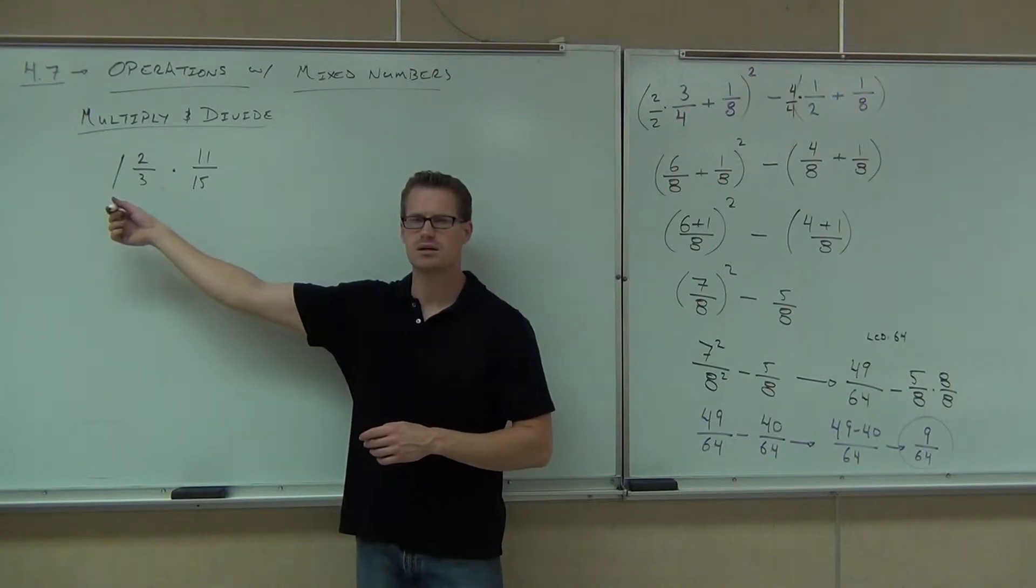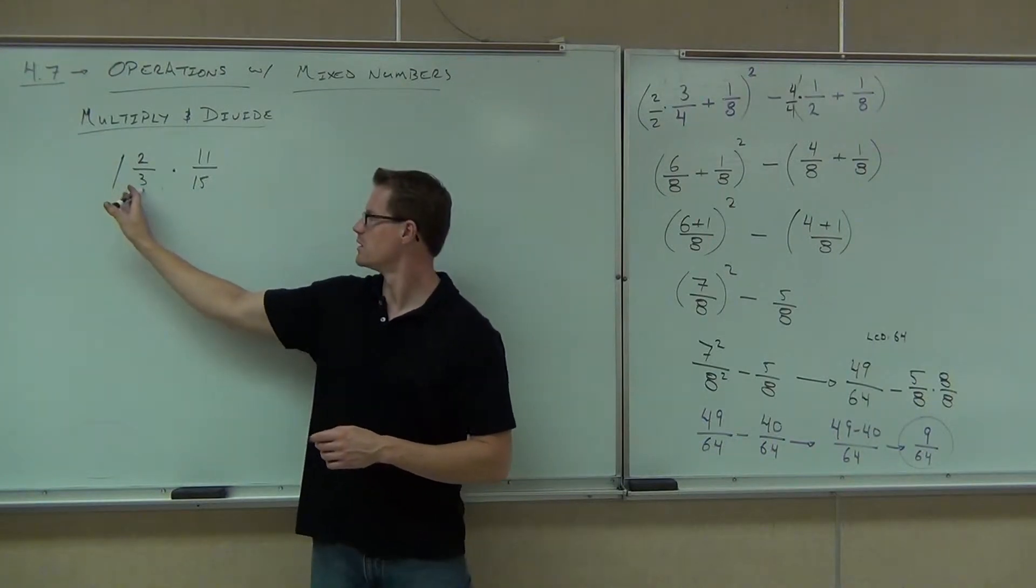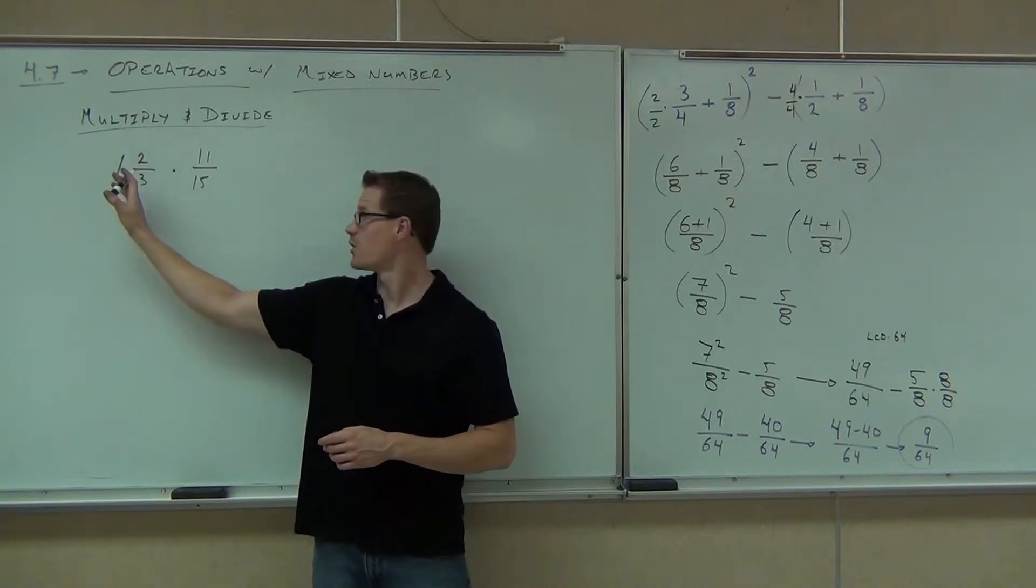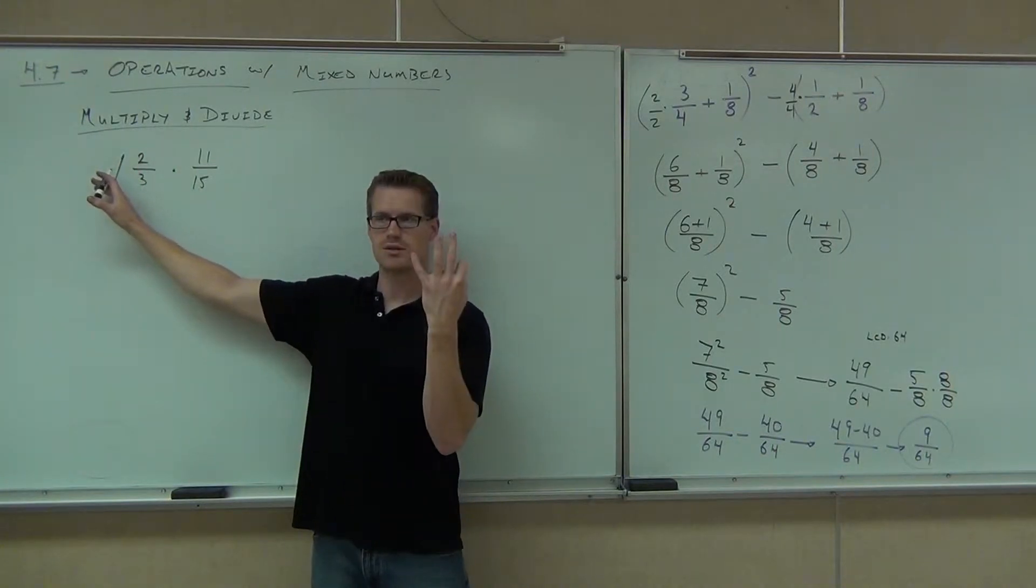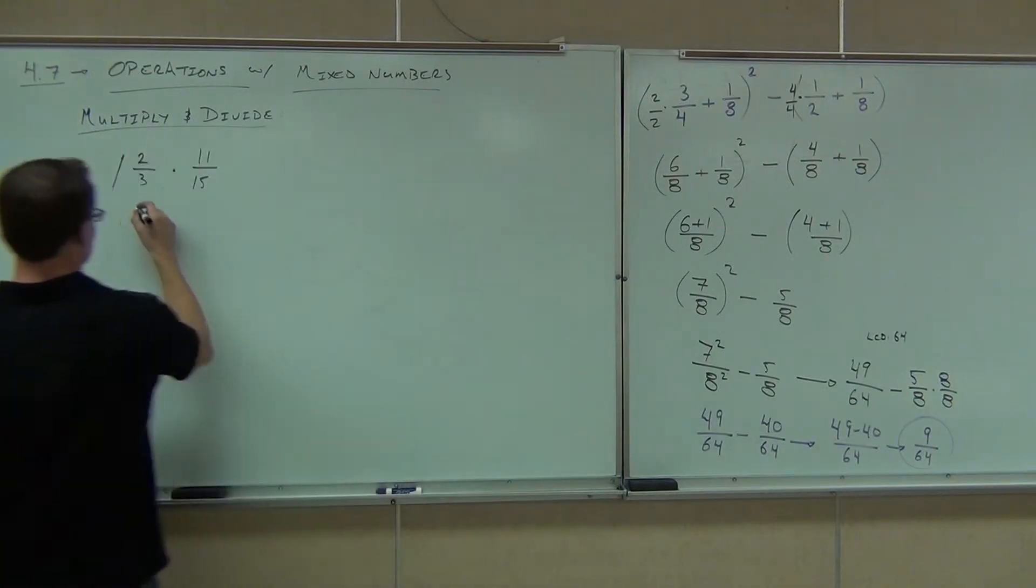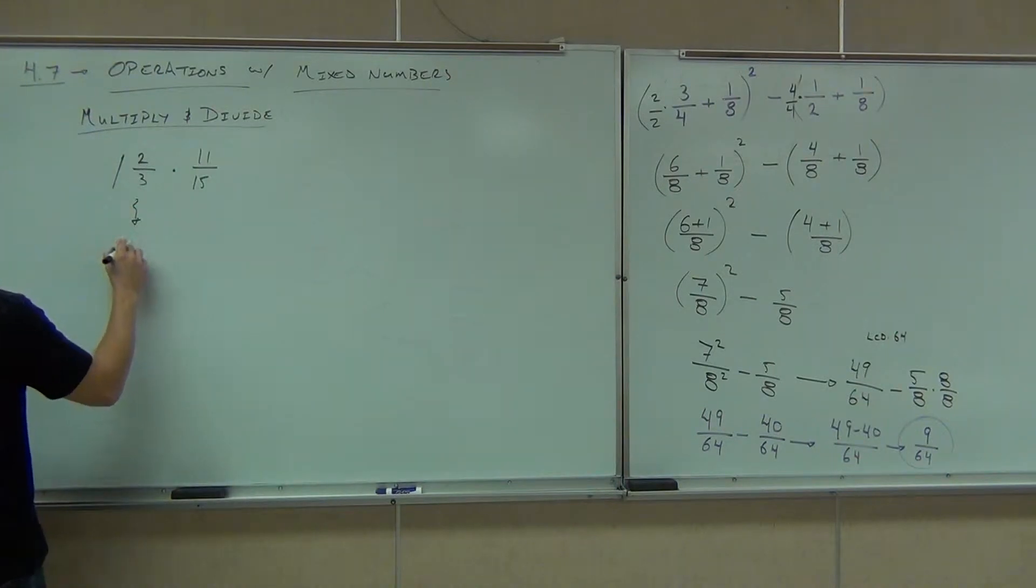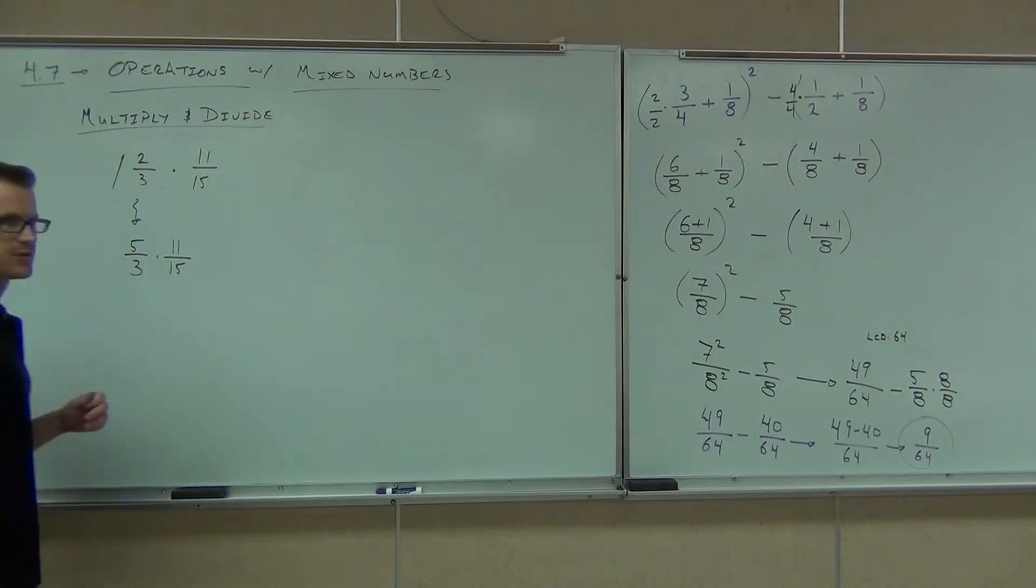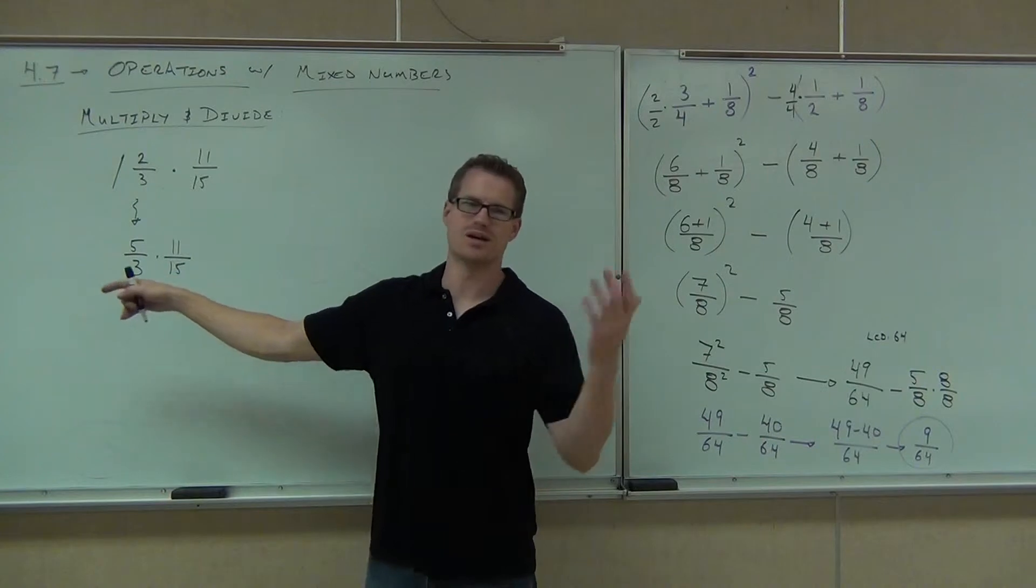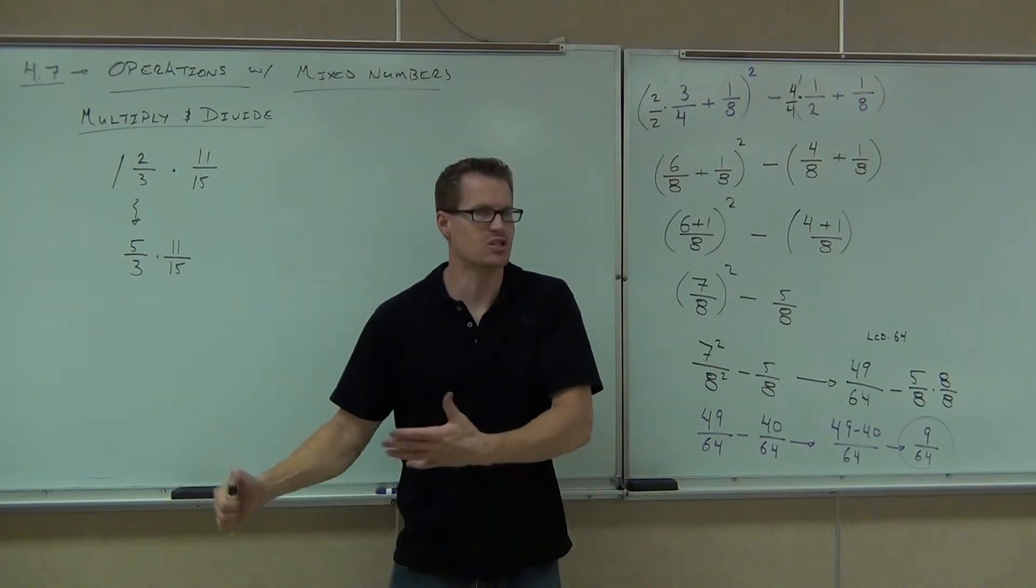What is this as an improper fraction? How'd you get that? You times the 3 and add 2. 3 times this number? And then you add the 2. So, 3 times 1 is 3. You add the 2, you get 5. The denominator won't change. So, you're going to get 5/3 here times 11/15. Can you do that problem? Yeah. We've just done that.